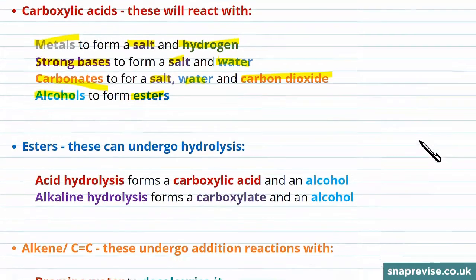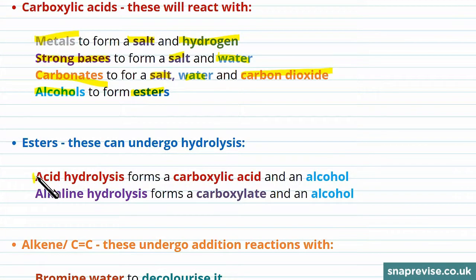The main reactions you need to know for esters are how to break them down. We can break them down with acid hydrolysis, which forms a carboxylic acid and an alcohol. But if we use alkaline hydrolysis we won't get an acid because of the alkaline conditions. We'll get a carboxylate ion and still an alcohol.